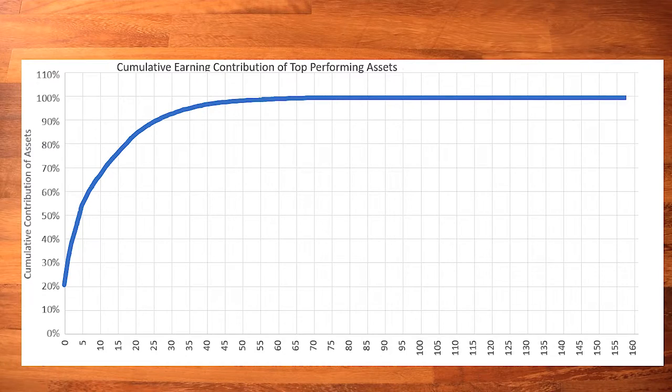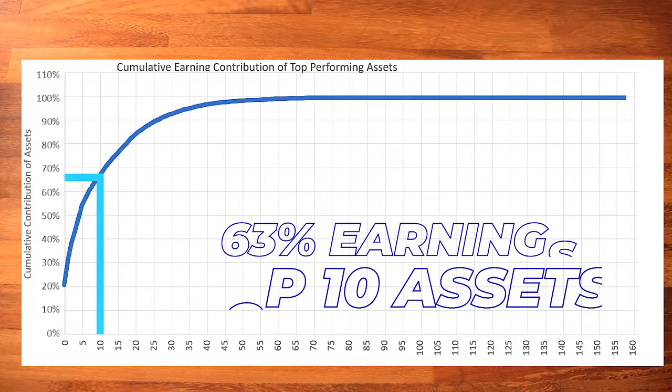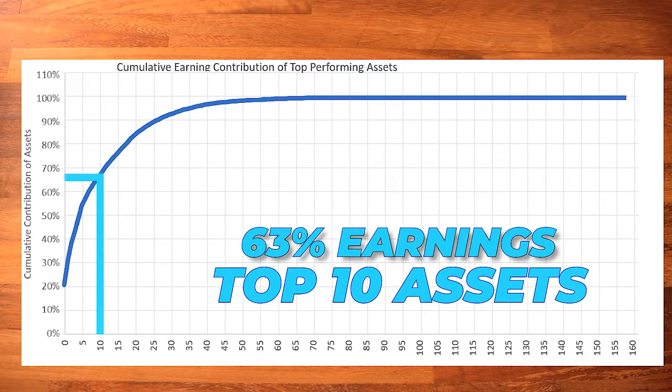That's just 12% of my portfolio contributing 82% of earnings — an interesting statistic. You can pick other numbers too, like the top 10 assets, which contributed to 63% of total earnings. So we've looked at the portfolio with percentages of the total earnings.